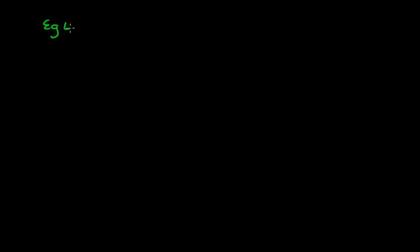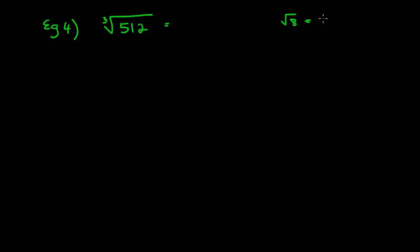Now we're going to do one last question — example 4. This time we're finding the cube root. Remember, the cube root looks like the square root sign, but we must put a little 3 in there. We're going to find the cube root of 512. Like the square root, but this time instead of looking for a number times itself twice, we want the same number multiplied by itself 3 times. For example, the cube root of 8 is 2, because 2 times 2 times 2 equals 8 — that's 2 to the power of 3. That's what we're aiming for.